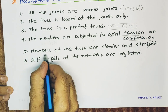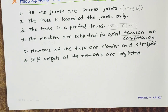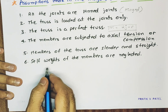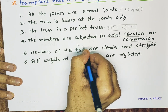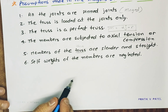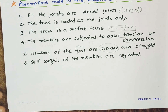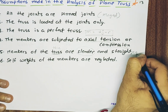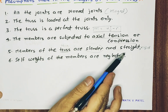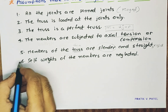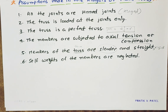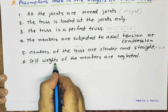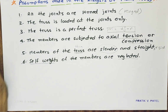The fifth assumption is members of the truss are slender and straight. Slender means thin members. We can also say rigid — slender, straight, and rigid. The sixth assumption is self-weight of the members is neglected. We are considering only the external forces acting, and self-weights are neglected. So these are the assumptions which we need to remember.